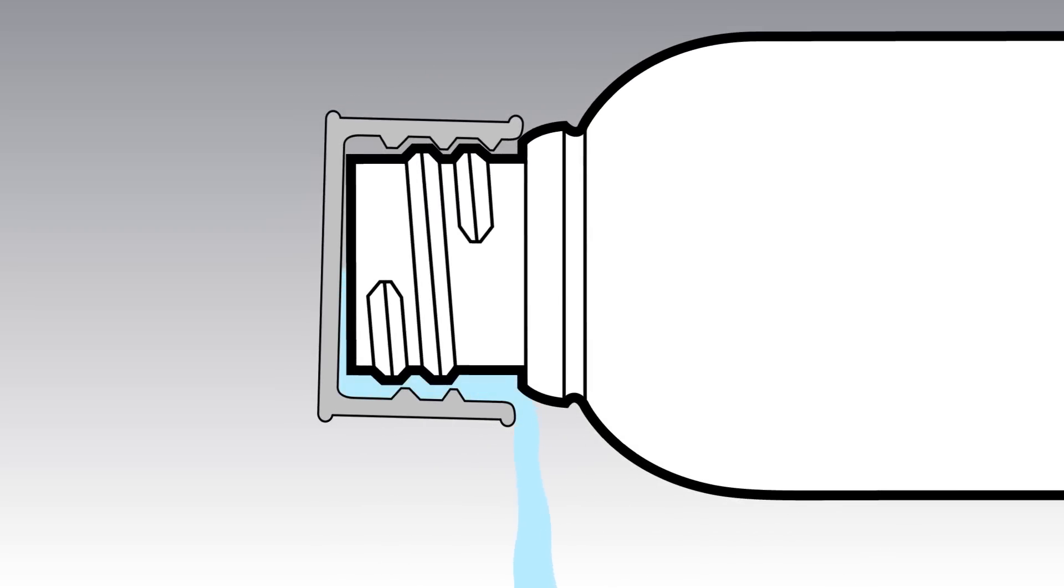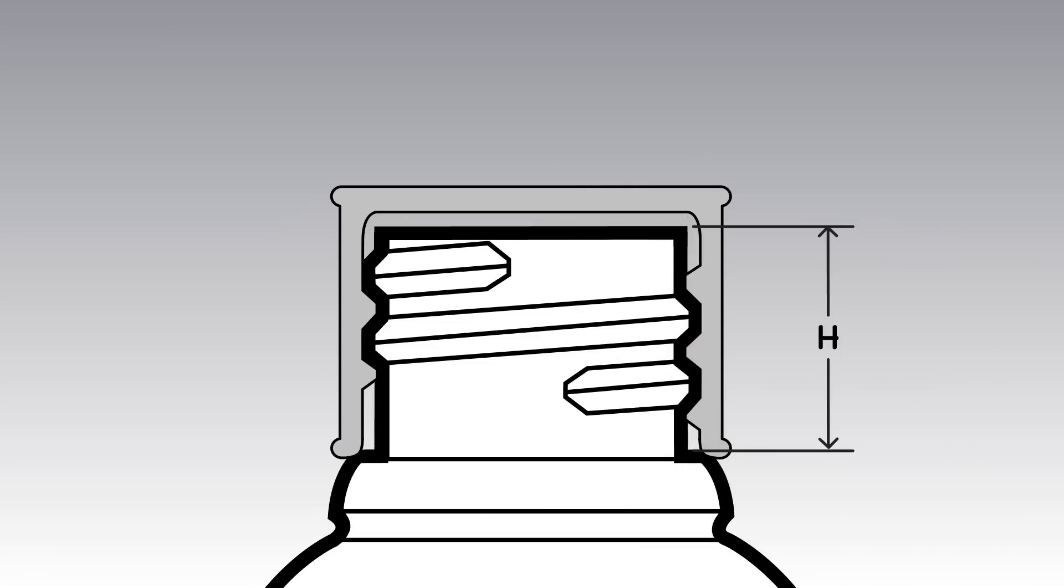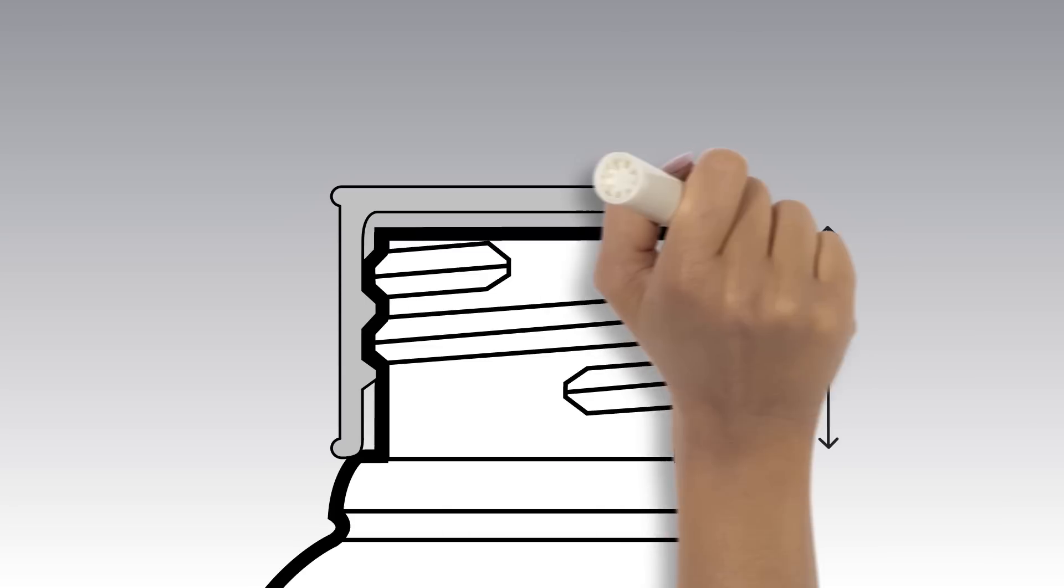If the bottle's H dimension is too short, the cap will bottom out at the bottle's neck bead or shoulder before a tight seal can be established at the closure land. If the bottle's H dimension is too tall, the closure skirt may be too high above the bottle bead or shoulder.